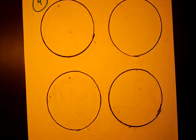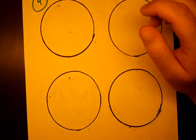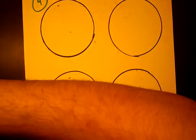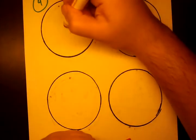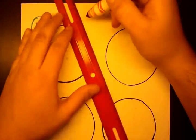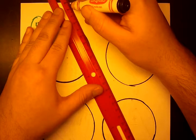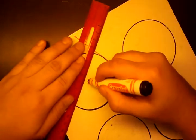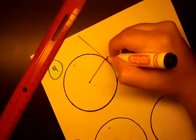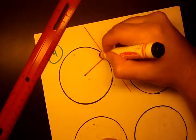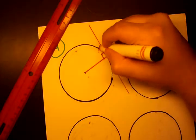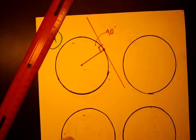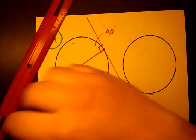Now we move on to theorem number 4, which deals with tangents and radii. We define the center of the circle, then draw a tangent — a line that touches the circle at only one point. We then draw the radius that touches it at the same point. The radius and the tangent are always perpendicular, meaning there's a 90-degree angle there. That's theorem number 4.